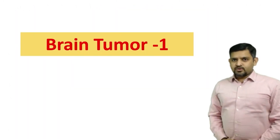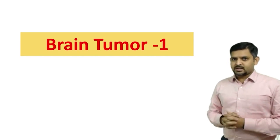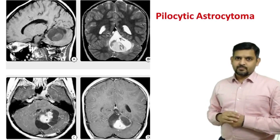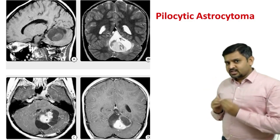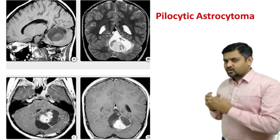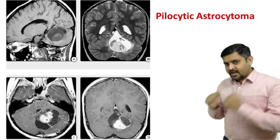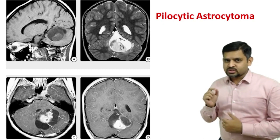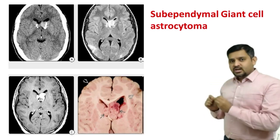In this video we will be talking about the imaging appearance of brain tumors. If you see a brain tumor which is a cystic lesion with eccentric nodular enhancement in a child in the cerebellum, think of pilocytic astrocytoma.